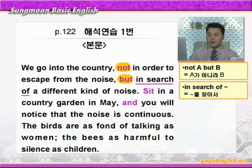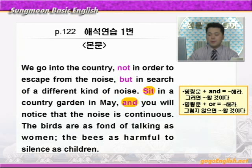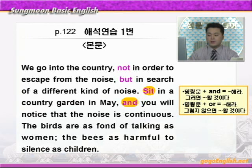'sit in a country garden in May.' 여기 sit과 다음 줄에 나오는 and에 동그라미 쳐보세요. 명령문 plus and는 '뭐뭐 해라, 그러면 뭐뭐 할 것이다' 이런 뜻이죠. 이것과 비교해서 알아둘 것이 있는데 바로 명령문 plus or입니다. '뭐뭐 해라, 그렇지 않으면 뭐뭐 할 것이다' 이런 의미가 되죠.